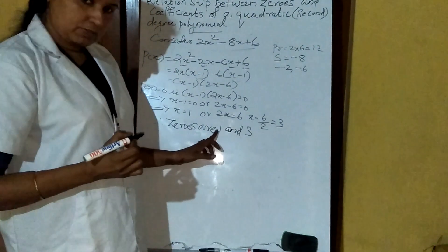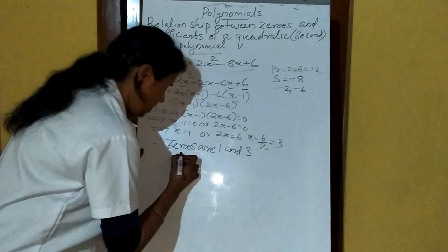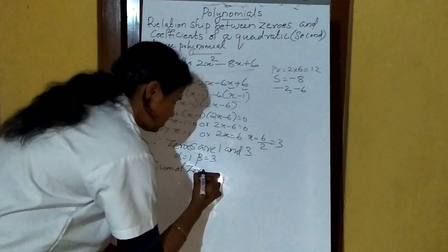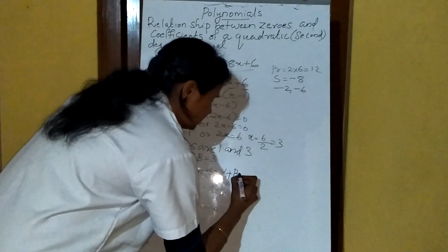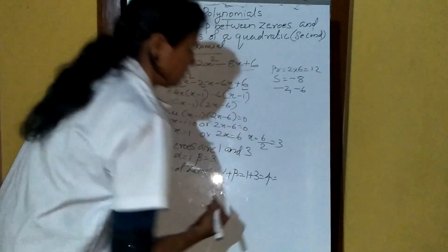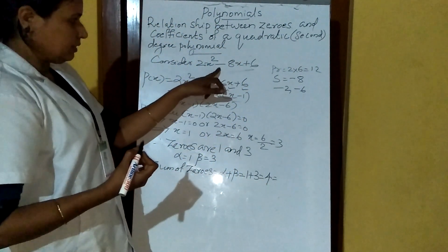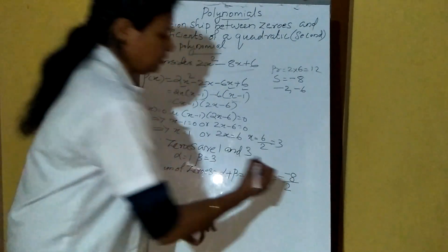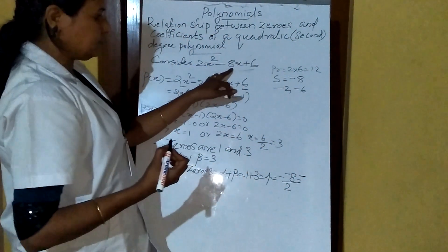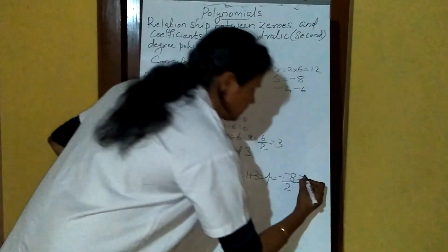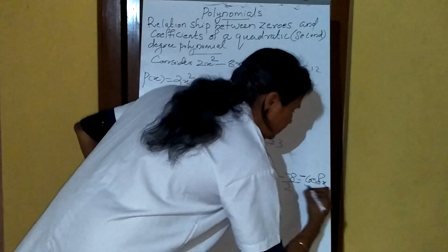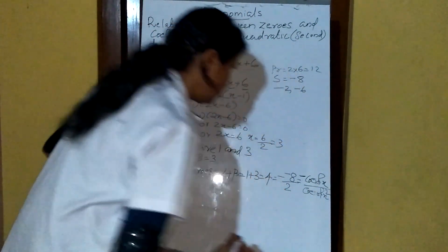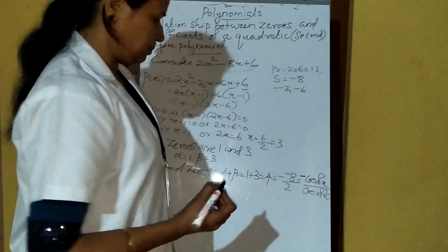Now we take the first zero as alpha and the second zero as beta. Alpha equals 1, beta equals 3. Sum of zeros: alpha plus beta equals 1 plus 3 equals 4. Now for the quadratic polynomial, minus minus 8 divided by 2 is 4. That means minus b divided by a equals 4. So sum of zeros equals minus coefficient of x divided by coefficient of x squared.